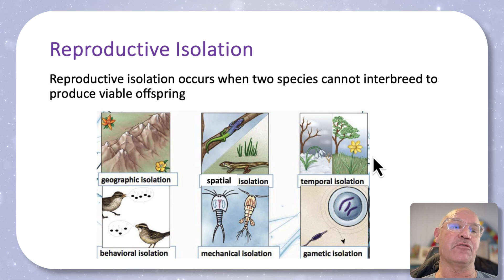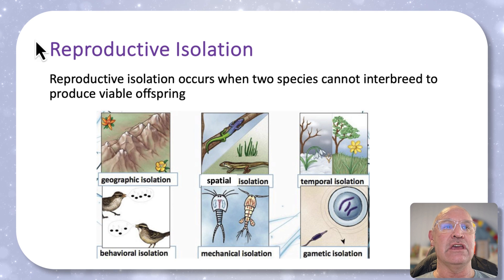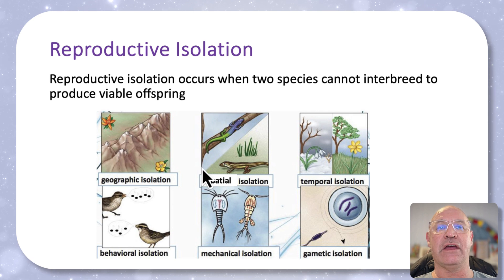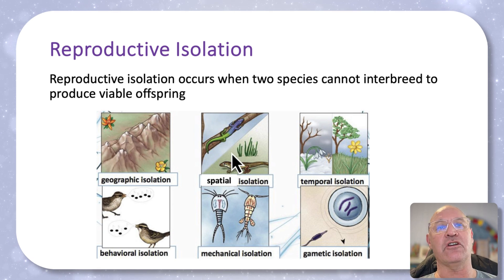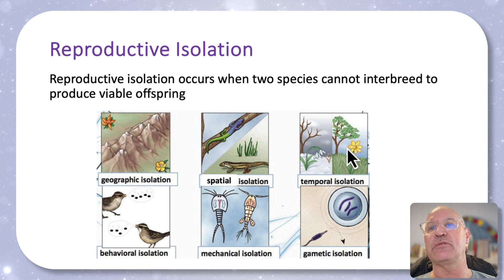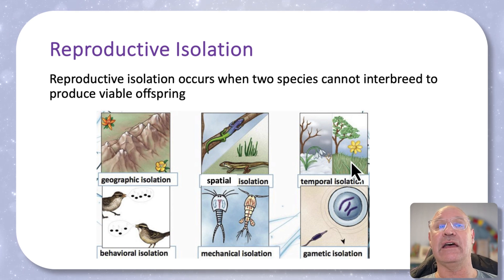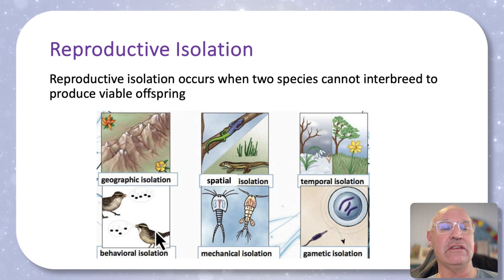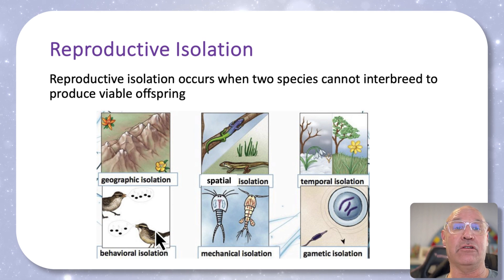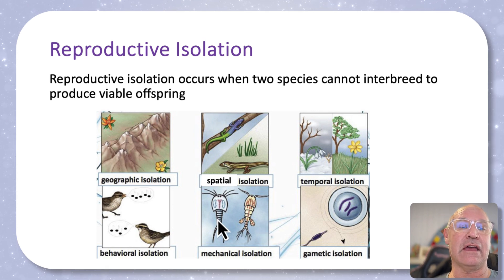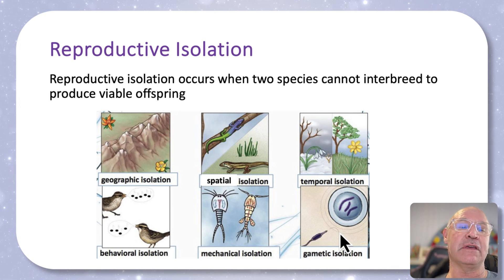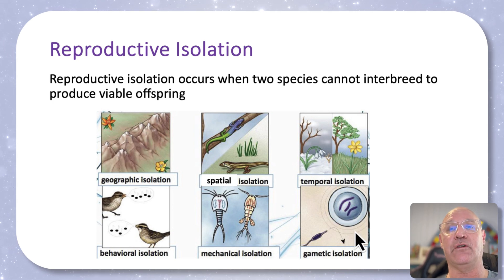Geographical isolation might involve a river, canyon, or mountain range, so there's no gene flow between the populations. Equally there might be spatial isolation, where populations occupy different niches and don't meet. Temporal isolation is when they reproduce at different seasons. There could also be behavioural isolation, where mating rituals mean they're no longer attracted to each other. It may be that their sexual organs are no longer compatible, or it might be at the gamete level — the gametes aren't compatible, so you can't produce fertile offspring.